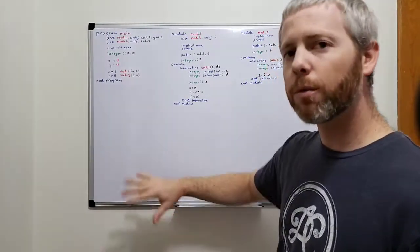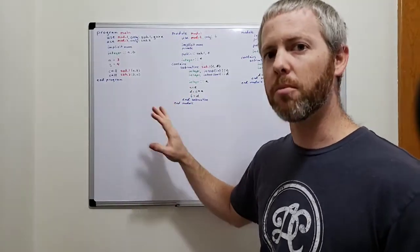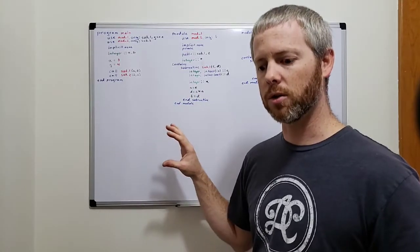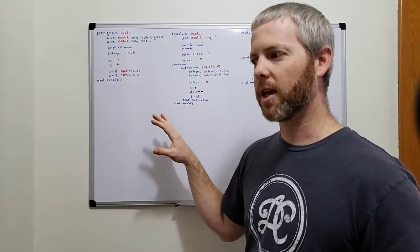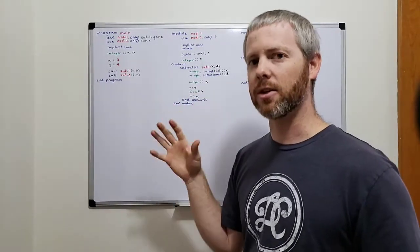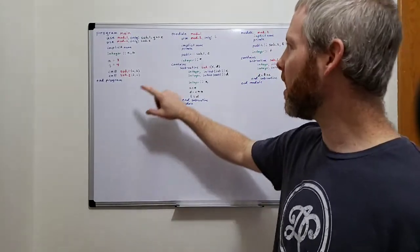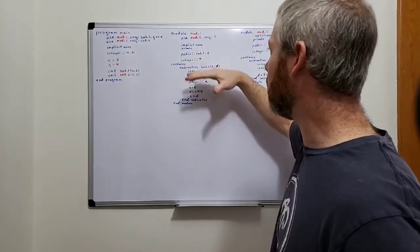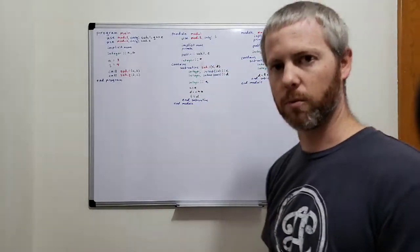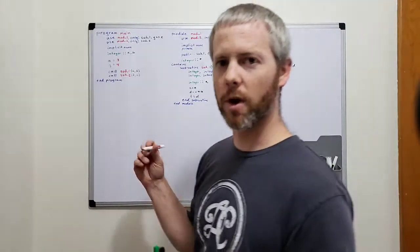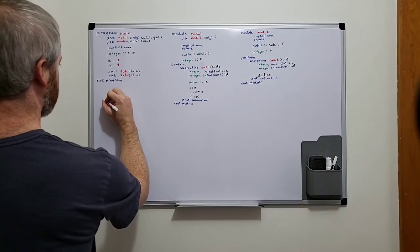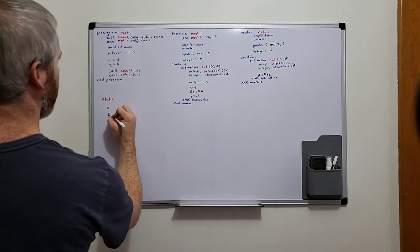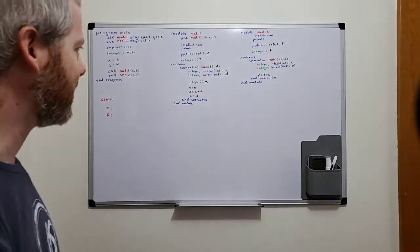The first thing I'm going to do is work through this program by hand. To set up our process, we want to know what's basically the static storage — any variables declared in a module that are out before the contained statement. So these two variables are going to be our static storage. I'm going to write 'static' over here. We've got two variables: E and F.